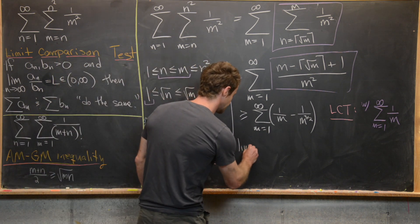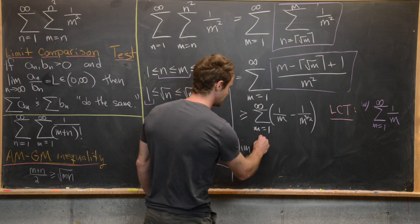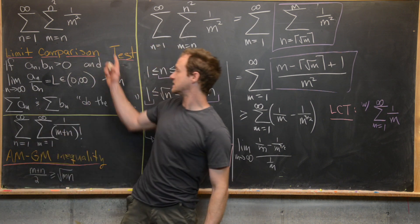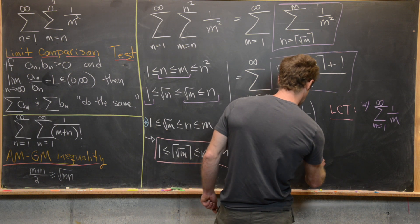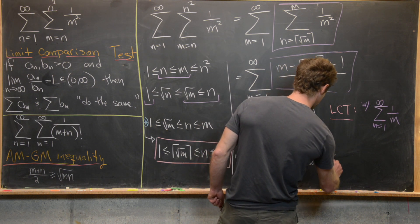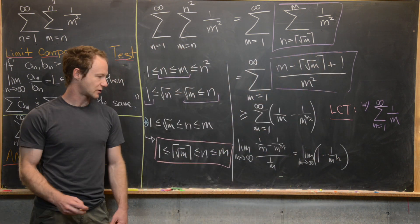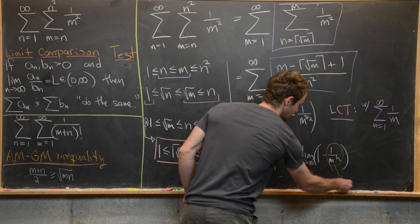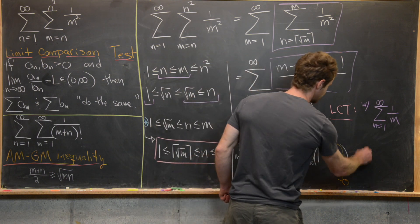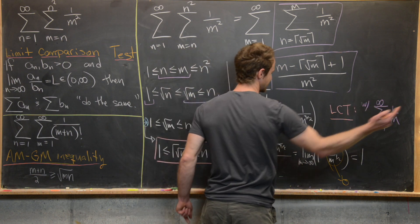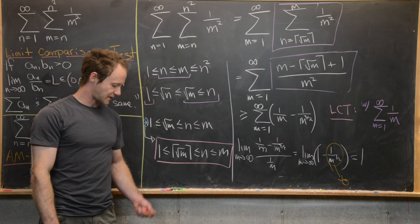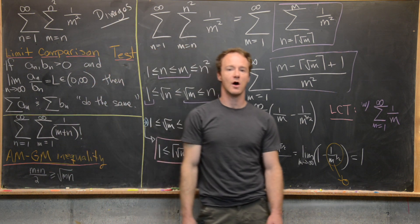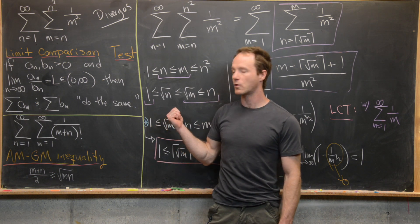So we look at the limit as m goes to infinity of one over m minus one over m to the three-halves, divided by one over m. That simplifies to the limit as m goes to infinity of one minus one over m to the one-half, by multiplying by m in the numerator. This term goes to zero because the denominator grows arbitrarily large, so we get that this limit equals one. That tells us the harmonic series and our series do the same thing. Since the harmonic series diverges, our series also diverges. So we're done with this first example.